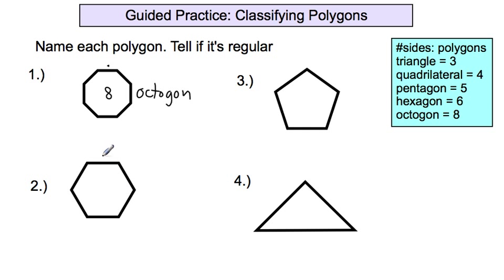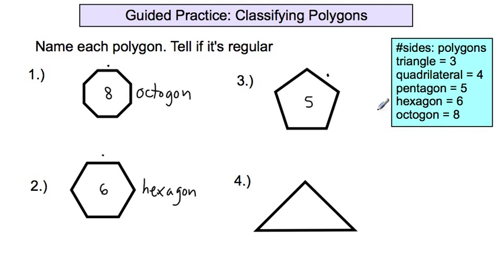Moving to the next shape: starting from a marked point and counting — 1, 2, 3, 4, 5, 6 sides. Six-sided figures are called hexagons. The next shape has 1, 2, 3, 4, 5 sides — it's a five-sided figure. Five-sided figures are called pentagons. And then the last one you should be able to get right away — it's a triangle.